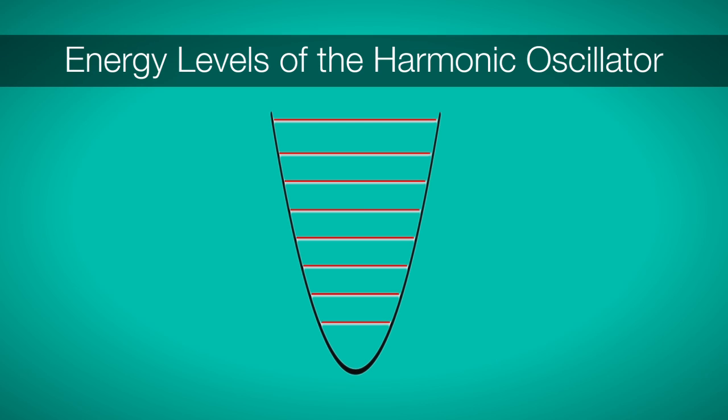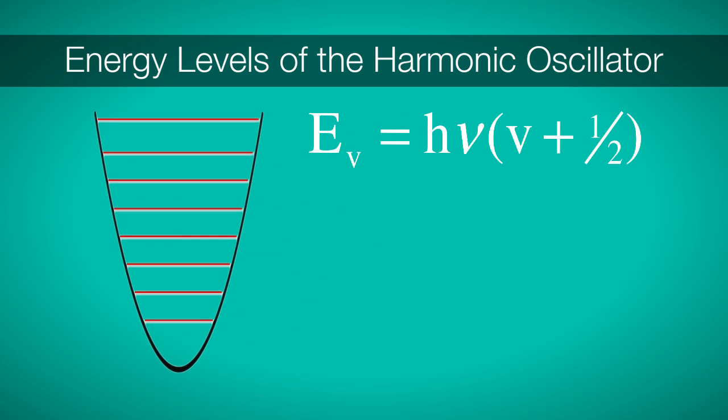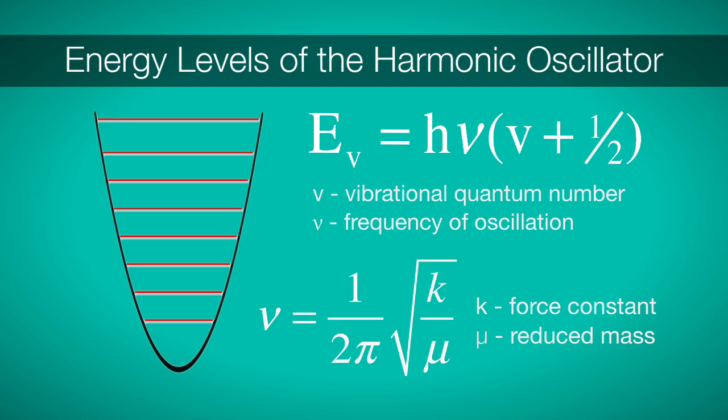Vibrational energy levels are predicted by a simple model, the harmonic oscillator. If we solve the Schrodinger equation for the harmonic oscillator potential, we find the allowed energy levels. The energy levels of the harmonic oscillator, shown here in red, are given by the simple expression Ev equals h nu times the quantity v plus one half. In this expression, nu is the frequency of the oscillation, which is related to the reduced mass and the force constant of our molecule by the relation nu equals one over two pi times the square root of k over mu.